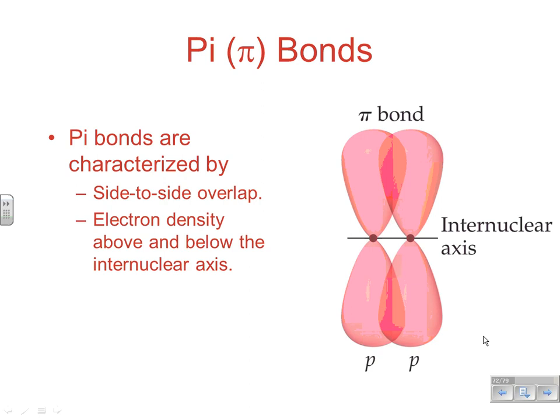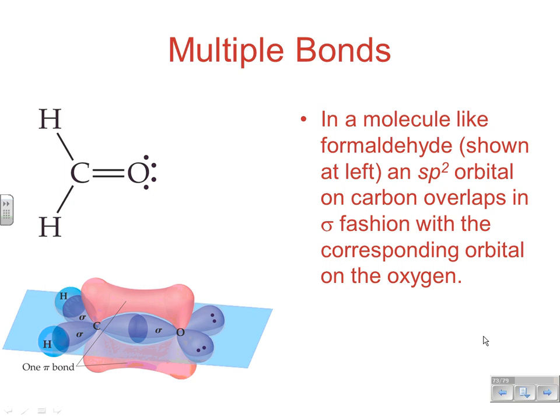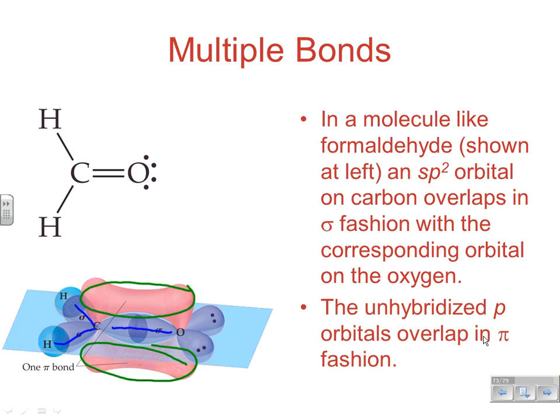In a sigma bond, the electron density exists between the two nuclei along the internuclear axis. In a molecule like formaldehyde, we have three electron domains, so it's sp2 hybridization with roughly 120-degree bond angles. Each single bond is a sigma bond — you've got one sigma between the C and O, and sigma bonds between C and each H. Those are all located around the bond axes. The pi bond in the double bond comes from side-by-side overlapping p orbitals, with electrons existing above and below the bond plane.